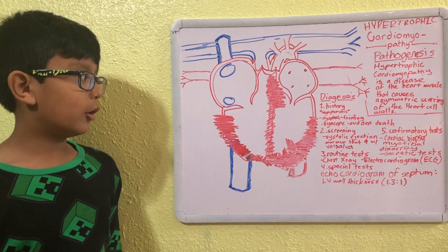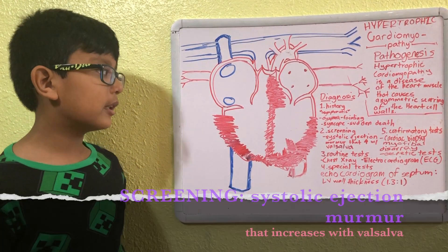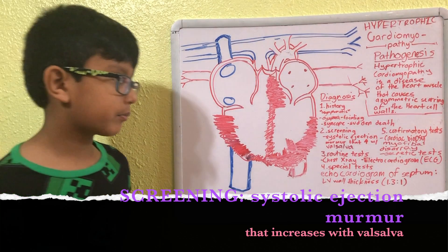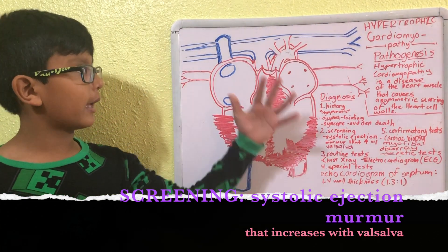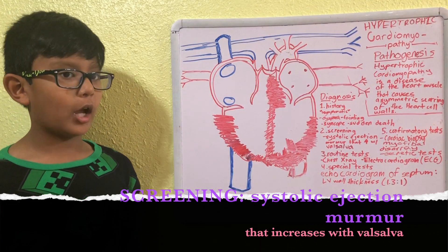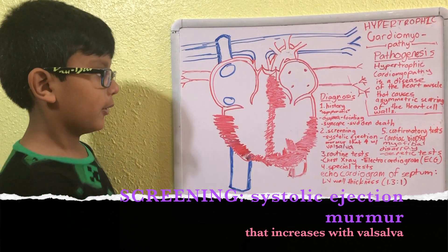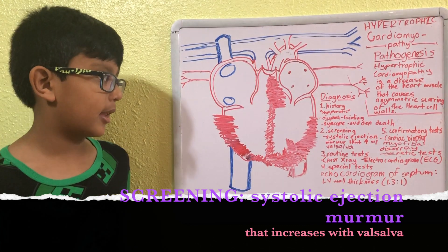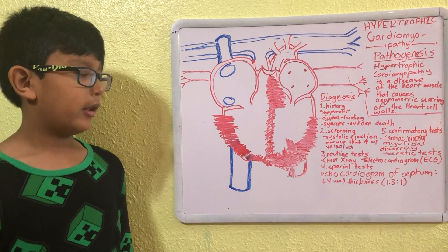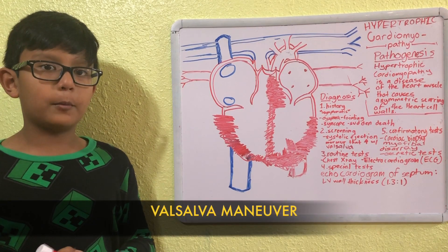the second step, screening. Now, when you screen a heart that has hypertrophic cardiomyopathy, you will have a systolic ejection murmur that increases with Valsalva. Well, Valsalva is the one that's going to increase pain in your chest. Now, you might not feel it, so moving on.